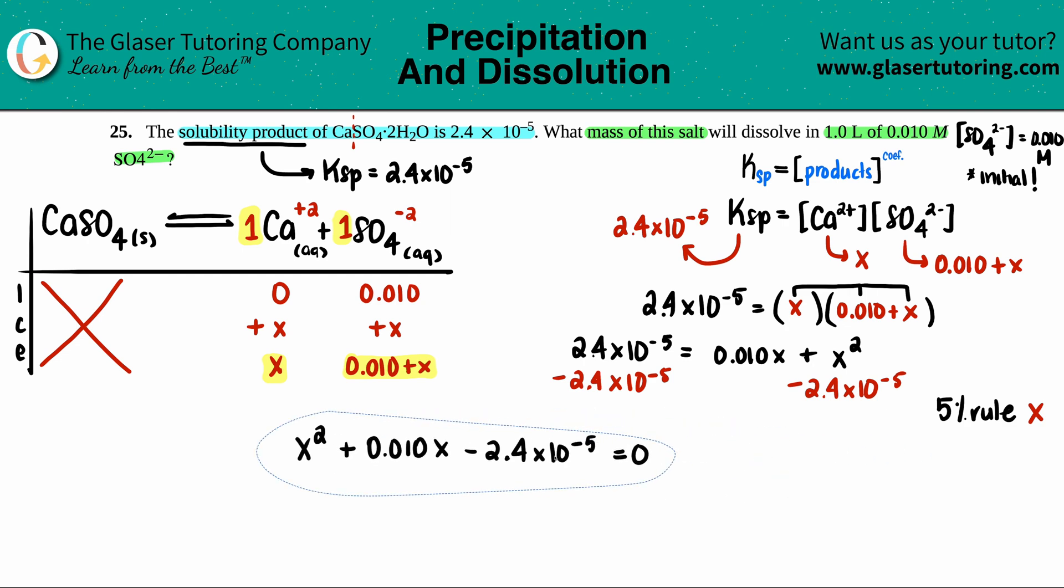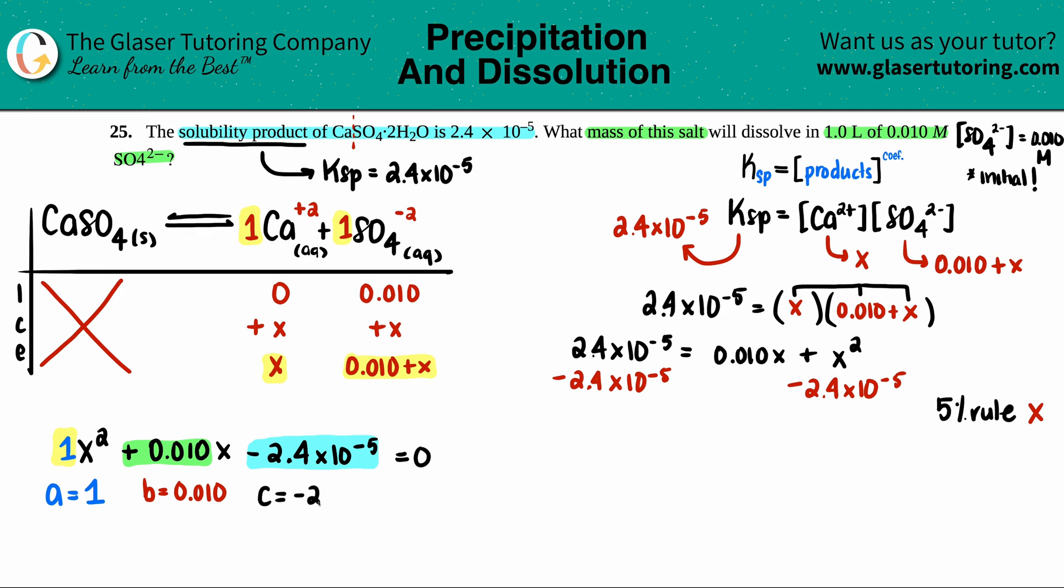Now from here, we have to get our a, b, and c value. So the a value, remember, is the number that's in front of the x squared. And since there was no number here, it's a 1. The b value is the number that's in front of the x value. Take into consideration what charge it is. So the b value is a positive 0.010. And then the c value is just the number that's just by itself. So in this case, I'll say that c is a negative 2.4 times 10 to the negative 5th. Now here comes the fun part, the quadratic equation, which is this right here. Negative b plus or minus the square root of b squared minus 4ac all over 2a. Yeehaw!